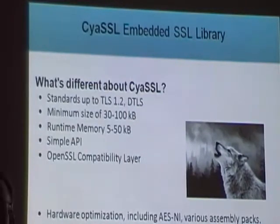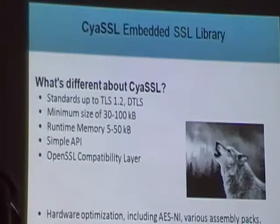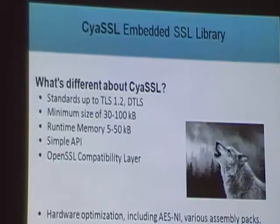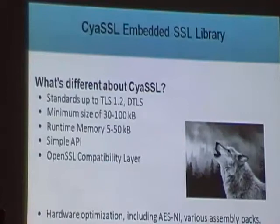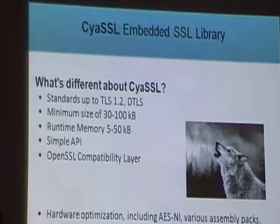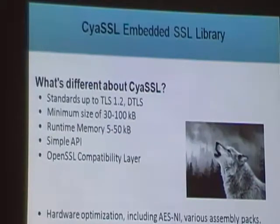One area we're really interested in is hardware optimization support. Most recently that means AES-NI — the new Intel server chips have AES built in, and we know how to call, use, and optimize against it. It's fast, and the benchmarks prove that out. You can see on our website what the delta looks like running AES-NI versus standard in-software AES encryption. We've also done a lot of assembly optimizations for different chips over time.